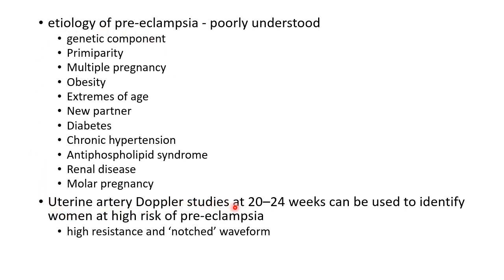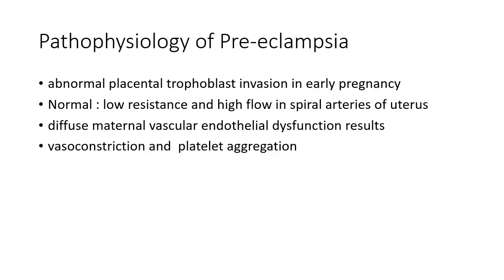Uterine artery Doppler studies can be done at 20 to 24 weeks to identify women at risk of preeclampsia. They reveal high resistance and notch waveform in those women at risk.